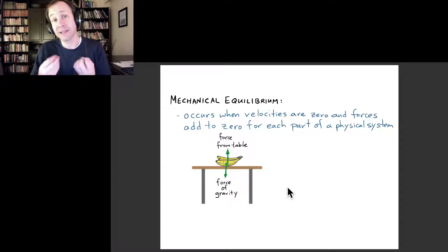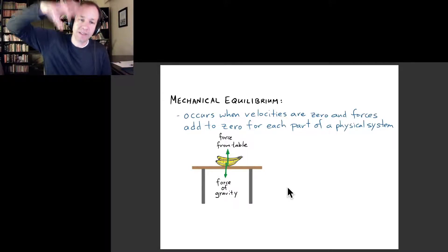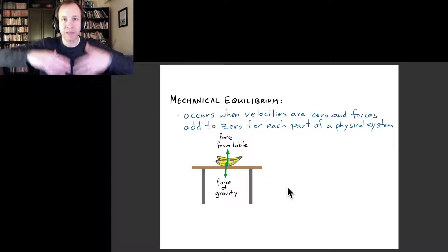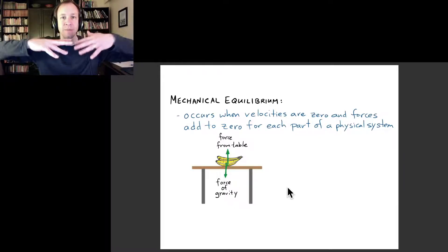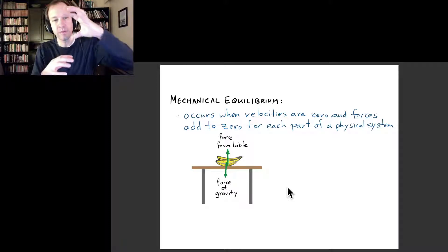But the bananas are not accelerating downward because they're on a table. From Newton's second law, we can conclude the table must be exerting an upward force on the bananas, called the normal force. The bananas compress the table slightly, and the table reacts by providing an upward force that's just enough to hold the bananas in place.